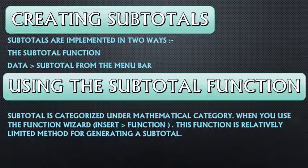तो subtotal create करने के लिए, उसको use करने के लिए, we have two ways. एक है subtotal function and दूसरा है data tab में से subtotal choose करना. Subtotal function कैसे use होता है? Subtotal is listed under the mathematical category when you use the function wizard. Function wizard हमने use किया था — हमारी formula bar के left hand side पे fx लिखा होता है, that is called function wizard. जब हम उस function wizard पे click करते हैं, तो we will get the function wizard dialogue box.